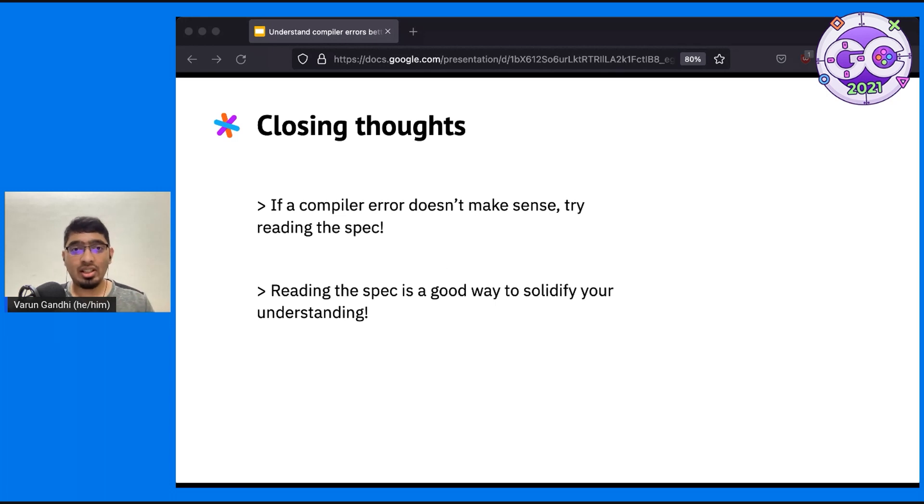I just want to leave you with a couple of closing thoughts. First, if a compiler error doesn't make sense, your first instinct may be to use Google or Stack Overflow. To that list, consider adding the spec as well. Because if you put in a little bit of extra work, you'll get a much more authoritative answer. Second, sometimes reading the spec can help you understand the different cases in the language which you hadn't considered before.